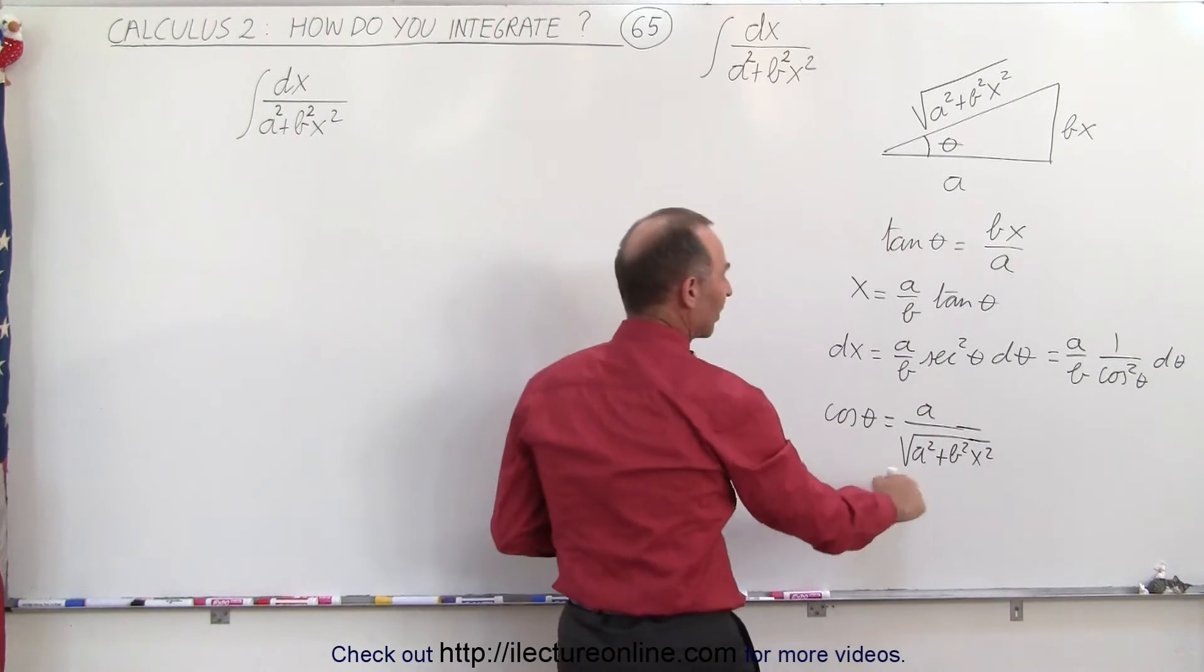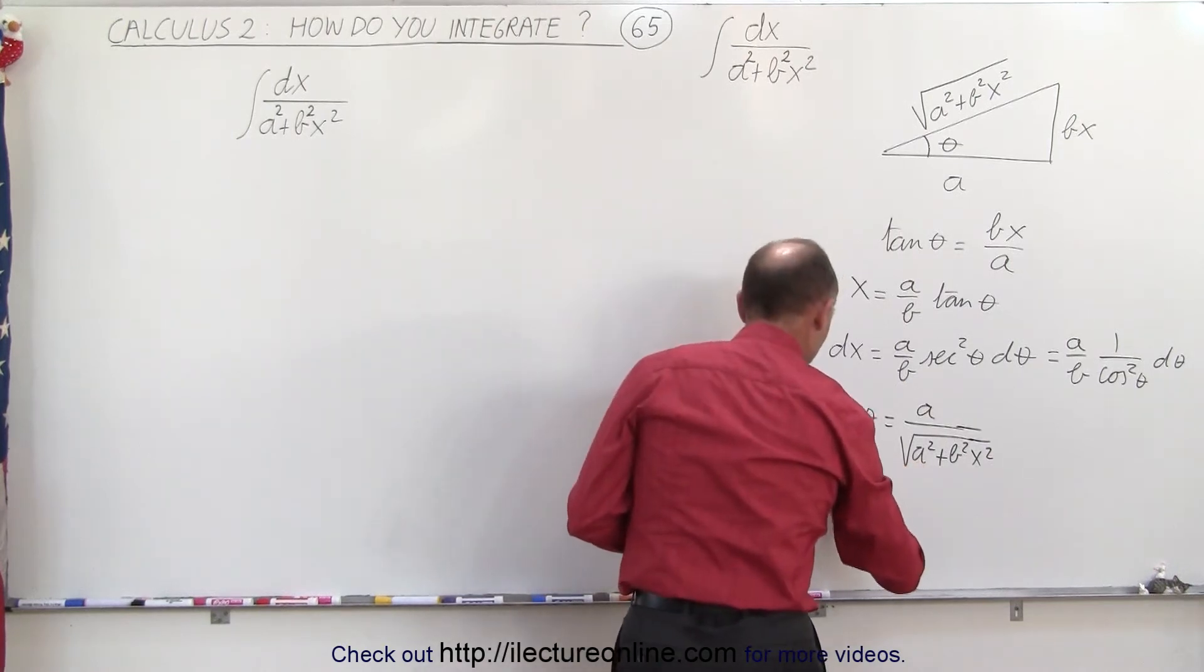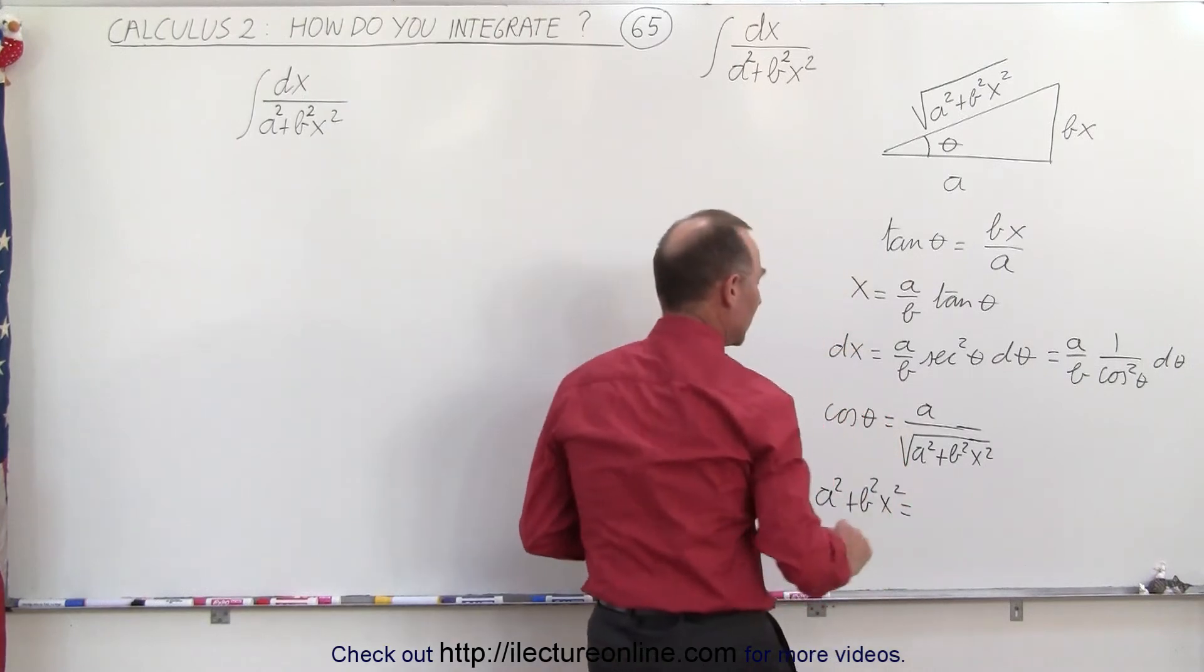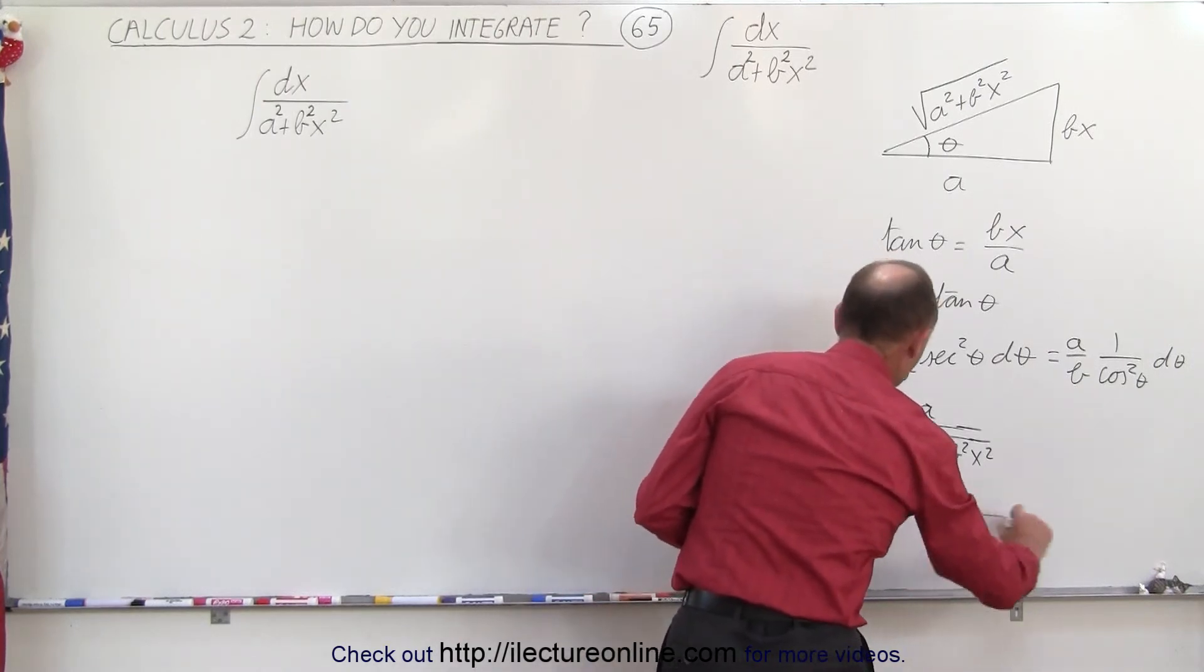And then if we square both sides and solve for this, we can say that A-square plus B-square X-square is going to be equal to A-square divided by the cosine square of theta.